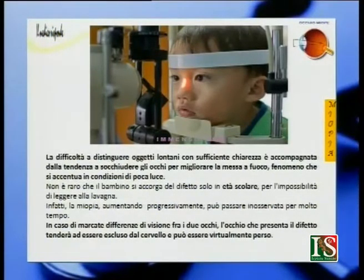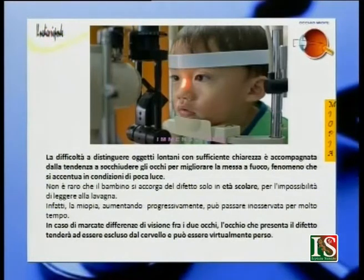In caso di marcata differenza di visione tra i due occhi, l'occhio che presenta il difetto tenderà a essere escluso dal cervello e può essere virtualmente perso. A volte un bambino va dall'oculista e gli viene chiesto di tenere la benda a un occhio. Questo serve per far sì che l'occhio più malato non venga completamente annullato dal cervello, che altrimenti fa funzionare solo l'occhio meno malato. La benda dà lo stimolo al cervello a far funzionare entrambi gli occhi.